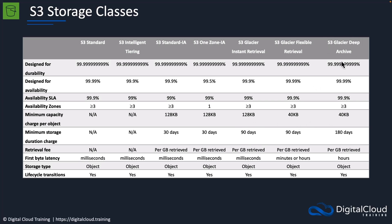Glacier Deep Archive is where you're really storing your data for a long period of time — for example, if you have compliance reasons to store your data for several years but are very unlikely to need to access it regularly, you would put it into Glacier Deep Archive, and it will be very cost effective. With Glacier Flexible Retrieval, the price point is lower than Instant Retrieval but not as low as Deep Archive, and you can access your data in somewhere between minutes and hours. With Deep Archive, it takes hours to retrieve your information.